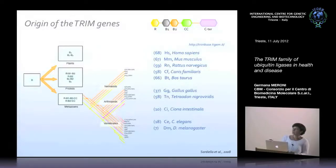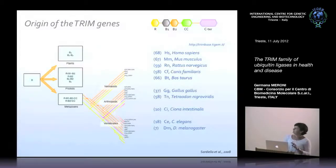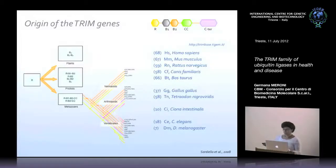Starting from invertebrates, different but a limited number of C-terminal domains have been added to the tripartite motif, and this has been more or less maintained throughout evolution. In invertebrates such as fruit flies, there are seven members of the family, and going up towards vertebrates and especially mammals, the number greatly increased to almost 70 members in humans.